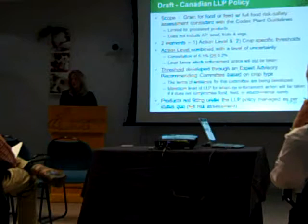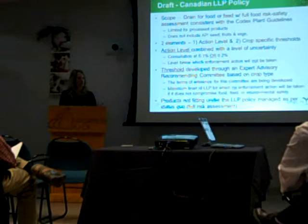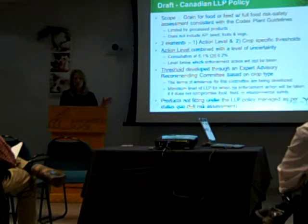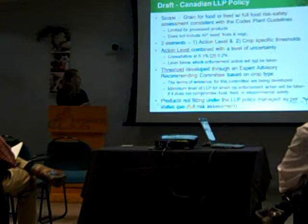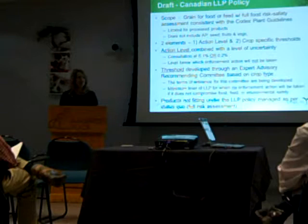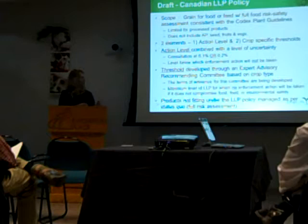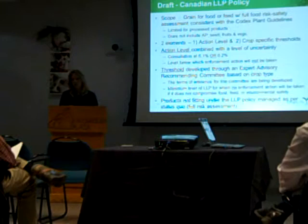It does not include adventitious presence. Adventitious presence is considered a product that does not have a full approval. An example of that would be the Liberty Link rice that happened a couple years ago — a similar rice had been approved, but that particular strain had not, so that would be considered adventitious presence, not low-level presence. It will not include seed, because seed is intended for sowing and also needs a more environmental risk assessment. They want to get food and feed done first, and then look at how to factor in seeds. And it's not for fruits and vegetables, because how would you get a low-level presence of a fruit or vegetable?